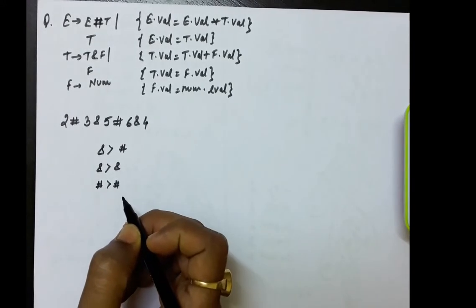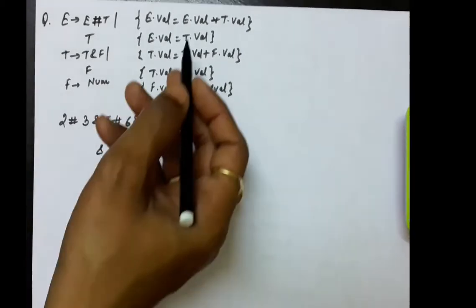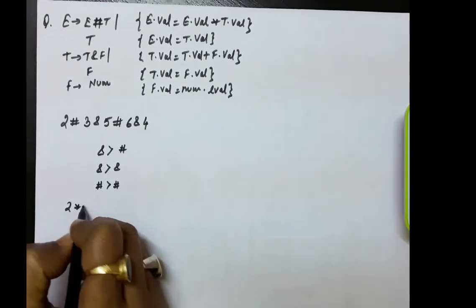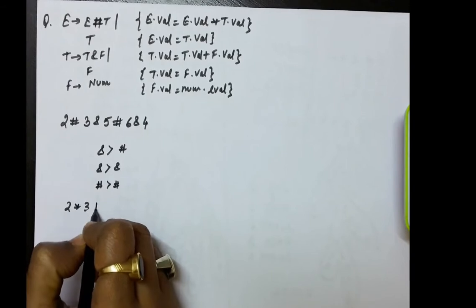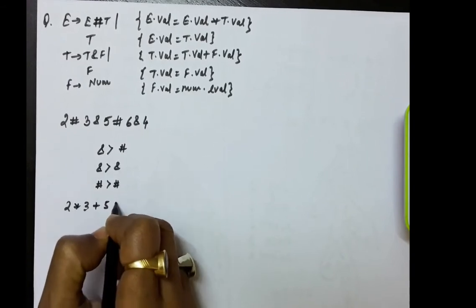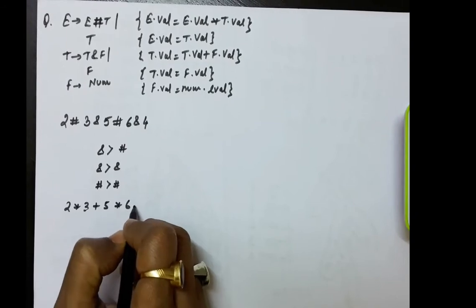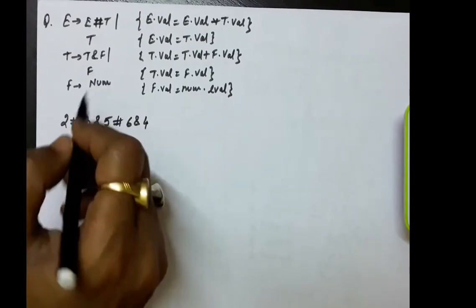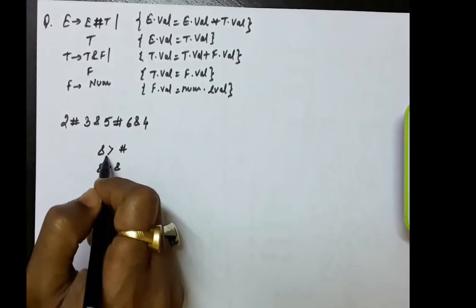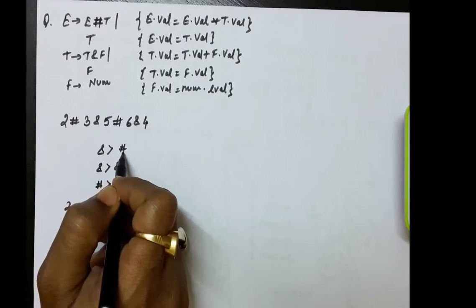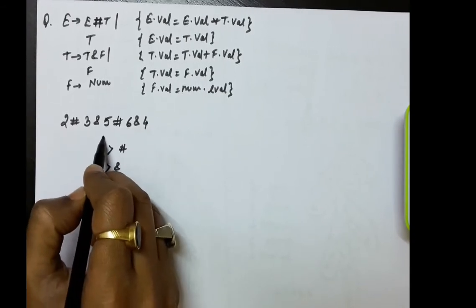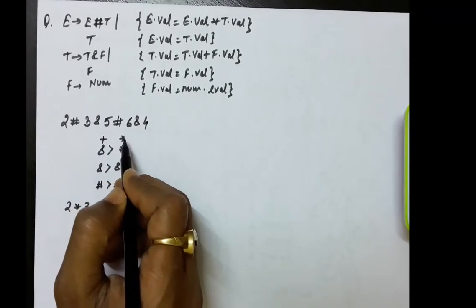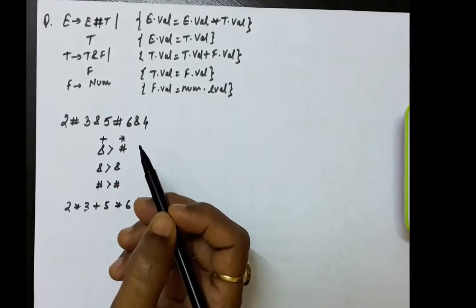Now if we convert this according to the semantic rules: hash will be converted to the multiplication sign, so 2 multiplied with 3; 'and' will be converted to the plus sign; hash will be converted to multiplication and 'and' will be converted to plus. The semantic rule says that 'and' (plus) is having more precedence than hash (multiplication), meaning plus will have more precedence than the multiplication sign.